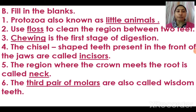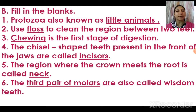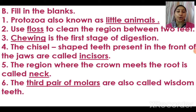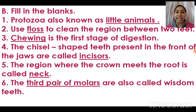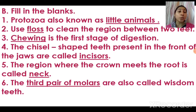Third: chewing is the first stage of digestion. Digestion starts from the mouth itself, so it starts with chewing. Fourth: the chisel-shaped teeth present in the front of the jaw are called incisors. There are four incisors in each jaw — front four in the upper jaw and front four in the lower jaw — so we have a total of eight incisors.